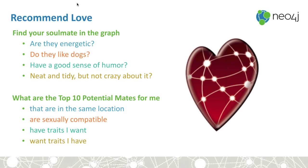Let's apply this to something else — love. You're looking for your soulmate in the graph, and you have a list of requirements: energetic, likes cats or dogs, good sense of humor, neat and tidy but not crazy about it. People have these crazy lists of things they want in a potential mate. We're going to look at a query to find the top ten potential mates in the same location — because maybe your soulmate is in China and you live in India and you just never meet. You want someone who is sexually compatible, and traits that I want the other person to have, and traits they want that I have. Love has to come from both ends.